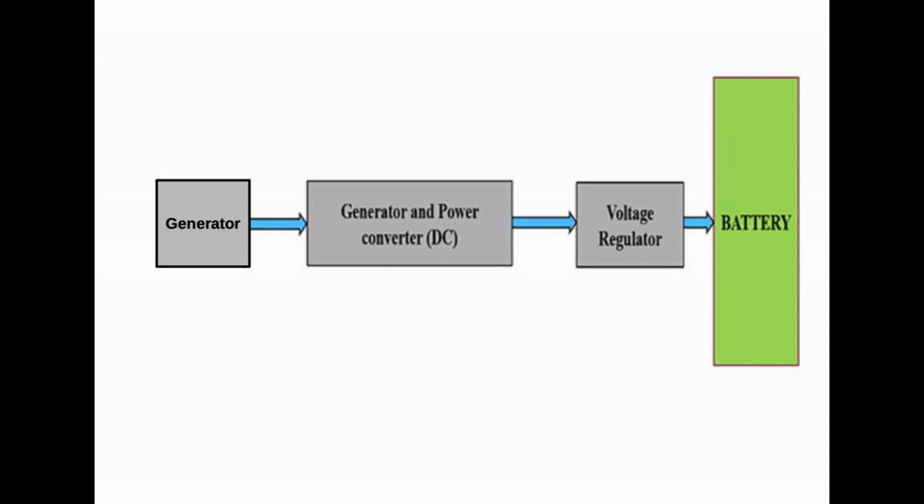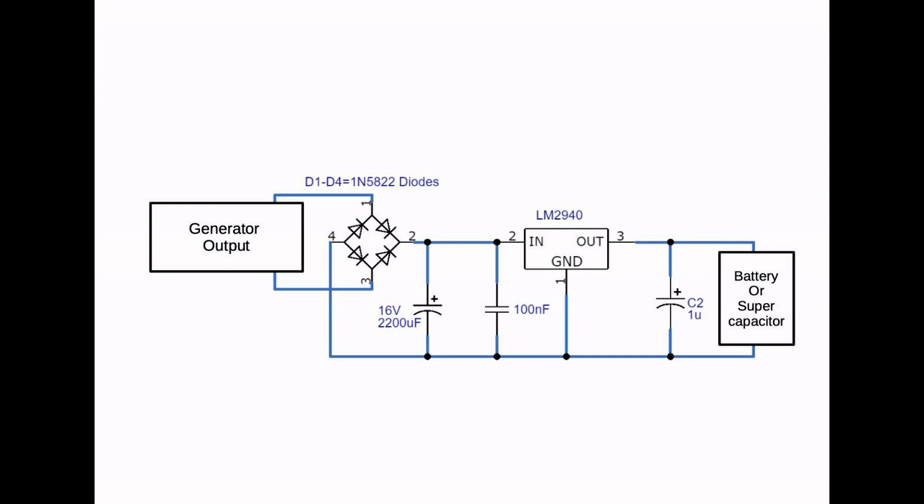To actually implement that, here's an idea. We've got the generator output going through those four diodes, you can see D1 to D4, and that's a rectifier bridge, a full wave rectifier bridge. Then we've got a couple of smoothing capacitors and there is the voltage regulator, and I used an LM2940, it's just a chip you can buy. That goes to the battery or supercapacitor. Now it's a very basic design, loads of ways if you do a real wind turbine you'll find MPPT or pulse width modulation or whatever, but that will do the job just fine and it's the basics of what you need.